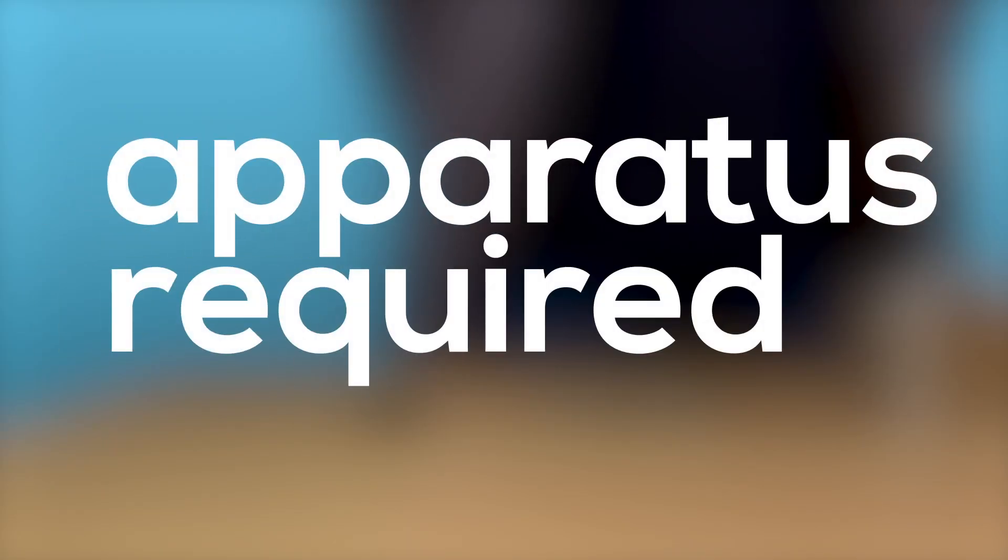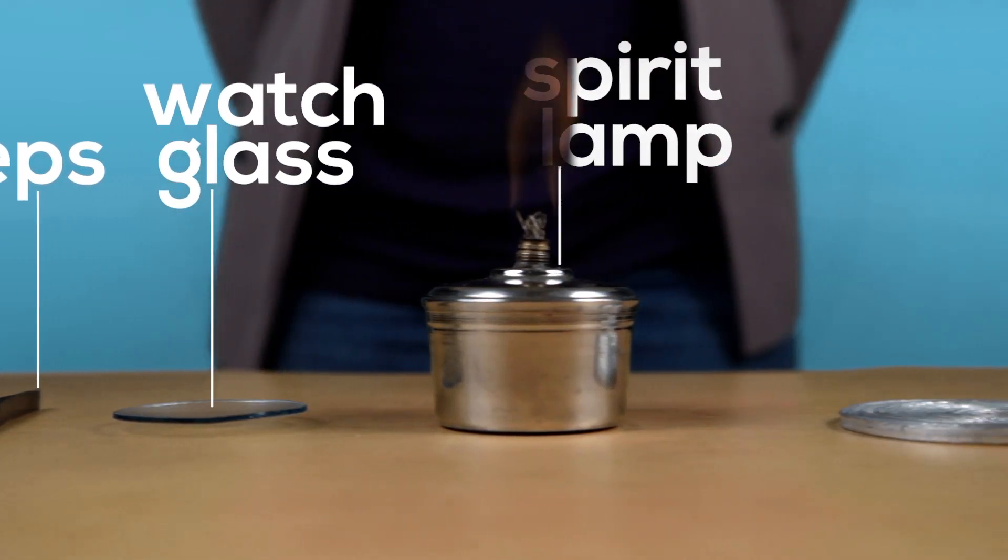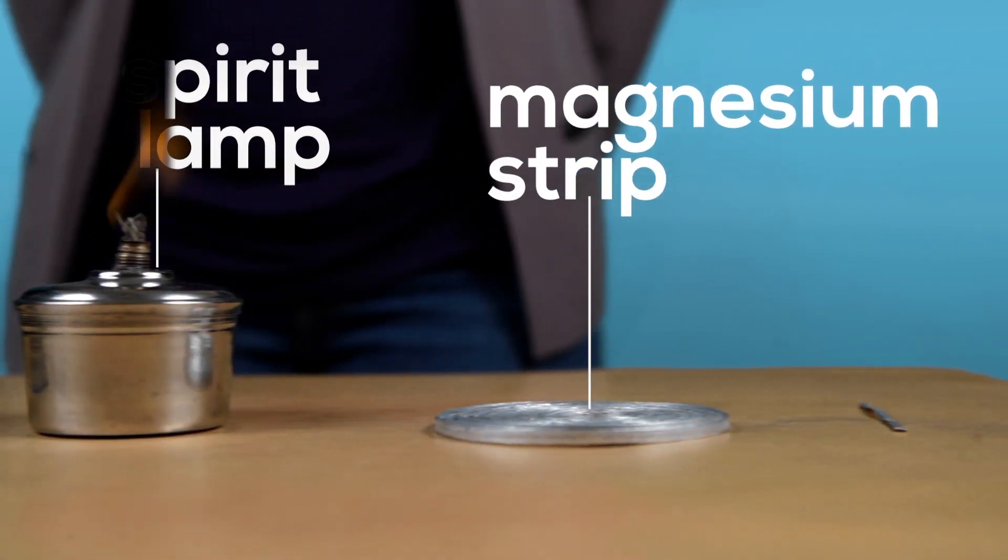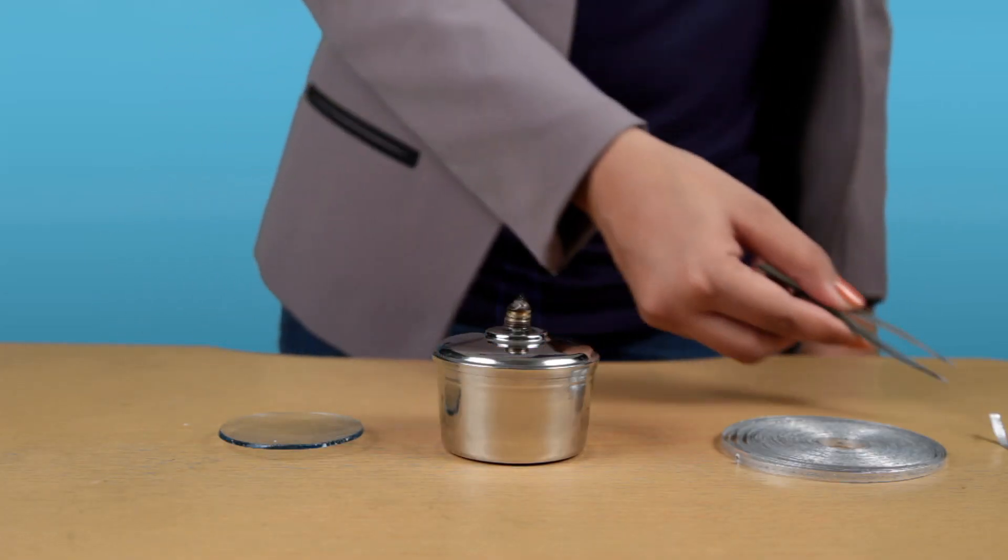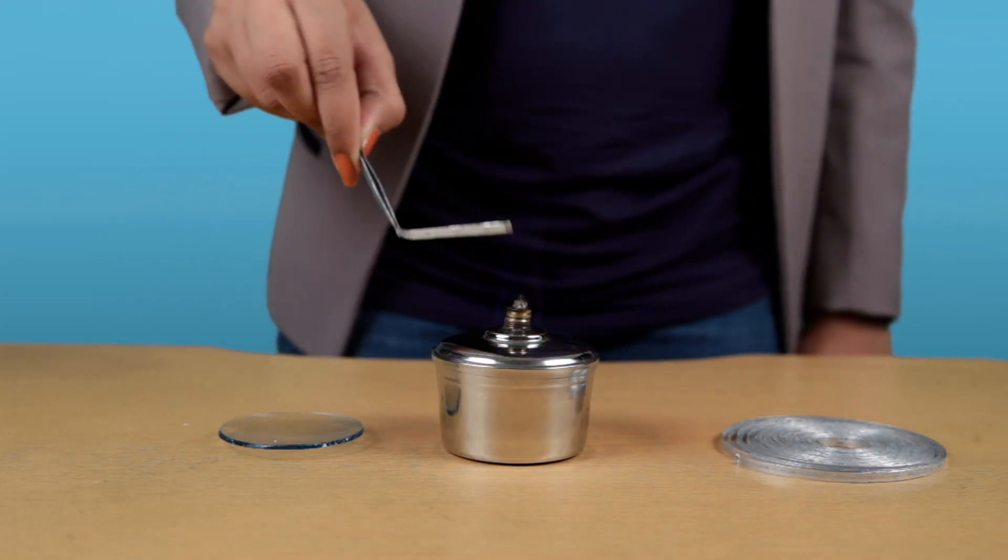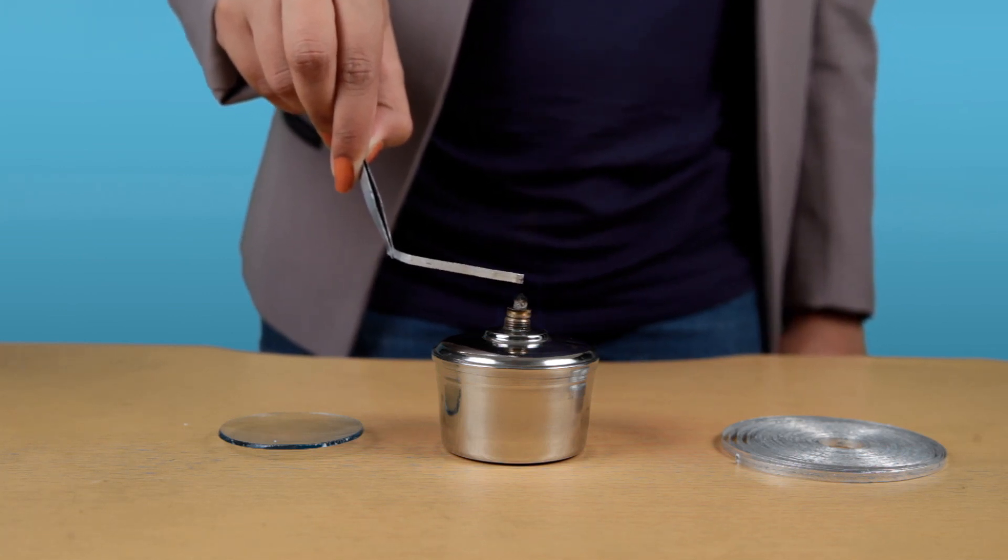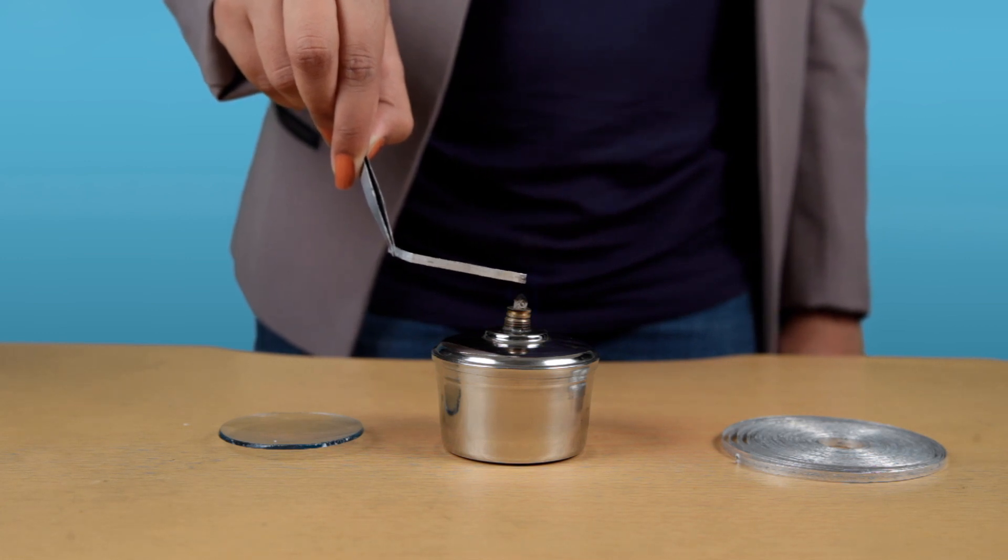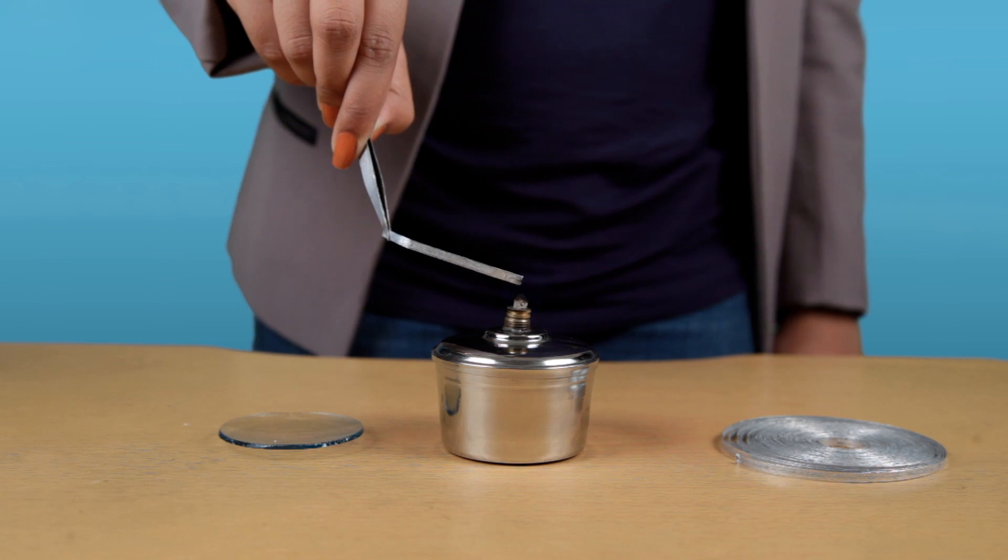For this experiment we need a forceps, a watch glass, a spirit lamp and a magnesium strip. I will hold this magnesium strip with the help of this forceps and now I will burn it over the burner. I have put a watch glass below. I have to be cautious while carrying out this experiment by keeping my eyes as far as possible.